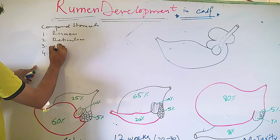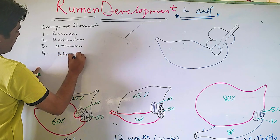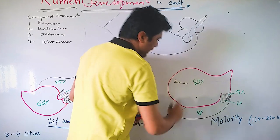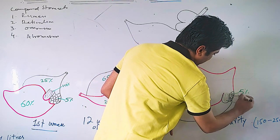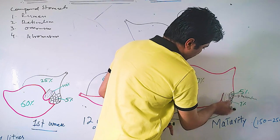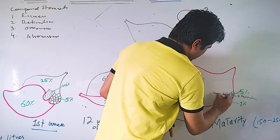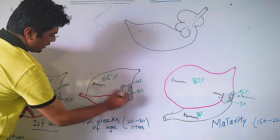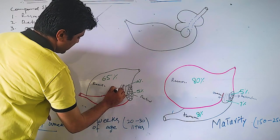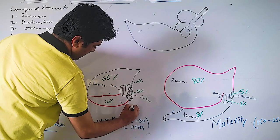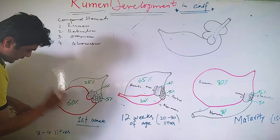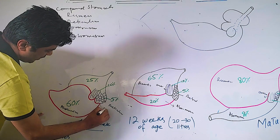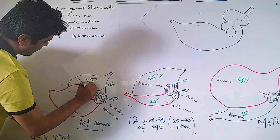The four compartments are: number one, rumen; number two, reticulum; number three, omasum; and number four, abomasum. In these diagrams, the large area is the rumen, the honeycomb-shaped structure is the reticulum, the one with lines is the omasum, and the remaining one is the abomasum.